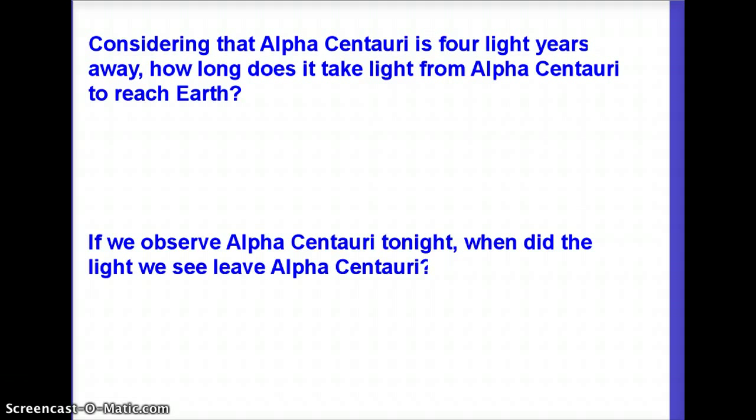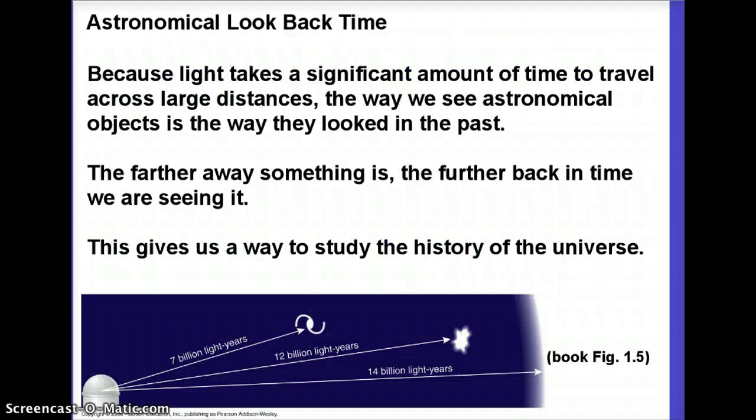And we can go more extreme than this, too. So the basic concept here, astronomical lookback time, says that light takes a long time to get across big distances. Light is the fastest thing we know. It's the fastest speed out there. But it still takes a long time to get across the ridiculously huge distances that we have in space.